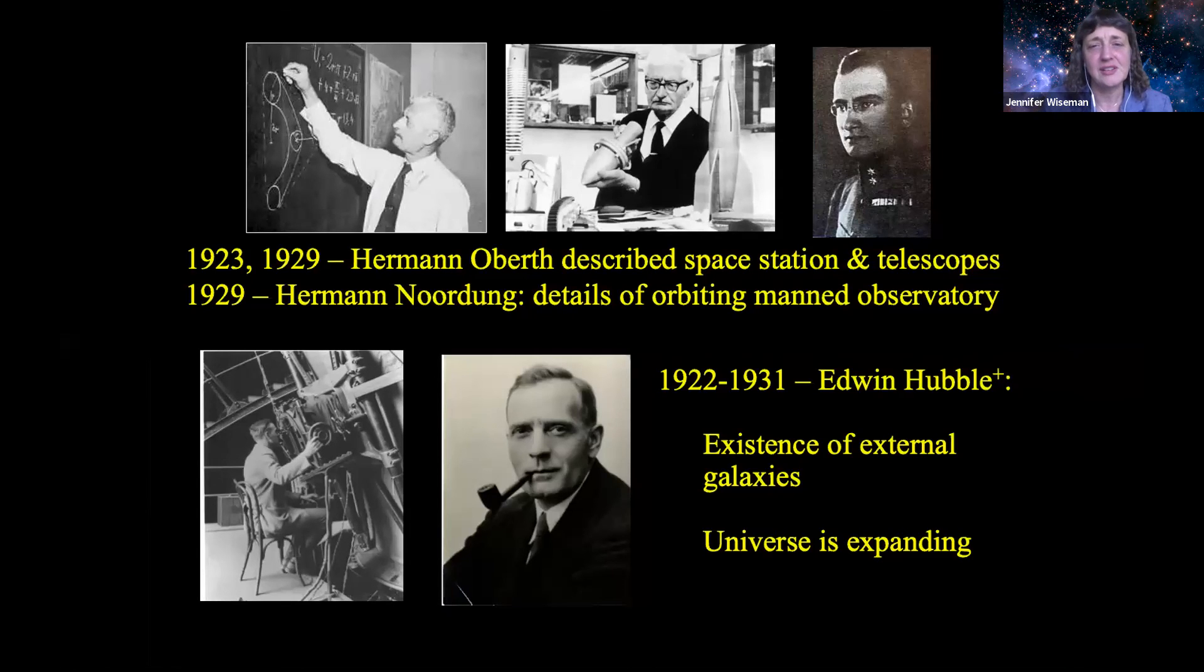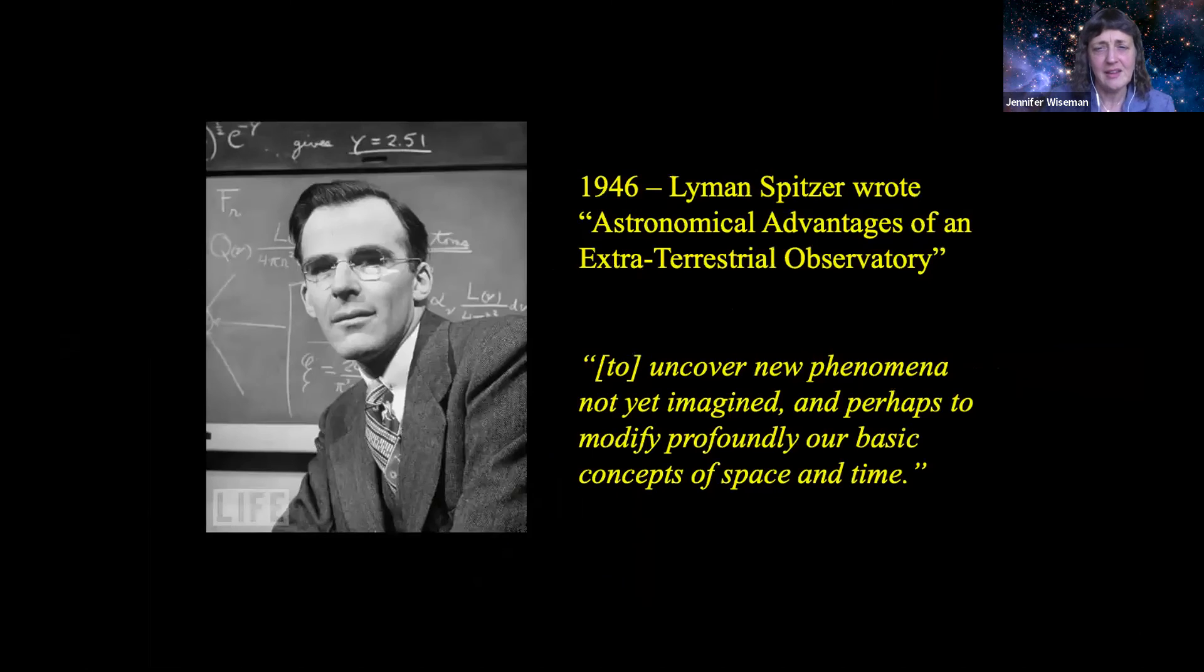Now, we have to dip back a little bit into history to see that these ideas have been percolating for quite some time. In the 1920s, Hermann Oberth and Hermann Noordung were already describing the idea of having orbiting observatories and space stations, and around the same time, Edwin Hubble, the famed astronomer himself, was already verifying that we had galaxies outside of our own Milky Way galaxy and that the entire universe seemed to be expanding. Lyman Spitzer then came along and wrote his own piece called Astronomical Advantages of an Extraterrestrial Observatory. Such advantages would be to uncover new phenomena not yet imagined and perhaps to modify profoundly our basic concepts of space and time, and that is exactly what the resulting large space telescope, named the Hubble Space Telescope, has done for us.